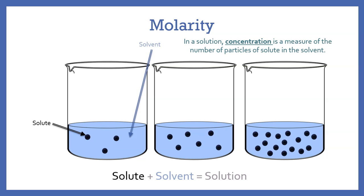A concentrated solution will have a large number of solute particles. A dilute solution will have a smaller number of solute particles. But saying something is concentrated or dilute is not very precise, so we have ways to get an exact measure of the concentration.